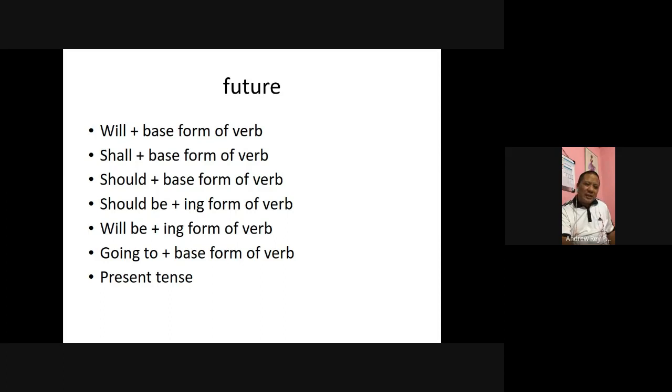And then shall, and then should, and should be, and then exposed to going to, and then the present tense. The present tense can be used to express future. For example, the plane leaves at 9 p.m. tonight. The plane leaves—that's present tense, but if you add 9 p.m. tonight, it expresses future.